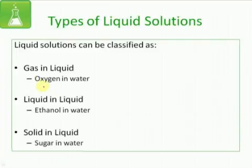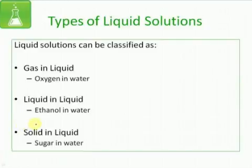The second type of liquid solutions are liquid-in-liquid solutions, in which the liquid is both solute and solvent. Examples include ethanol dissolved in water, vinegar, formalin, etc. The third type of liquid solutions are the solid-in-liquid solutions, in which a solid solute is dissolved in a liquid solvent. For example, sugar in water, or the salt solution.